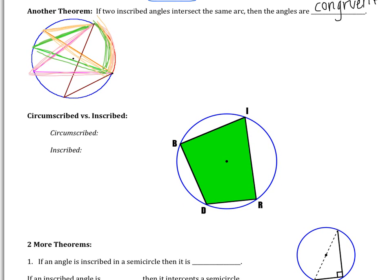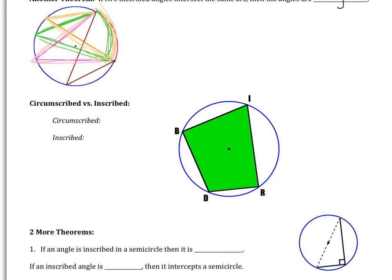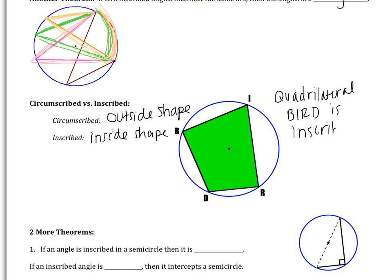We're going to use that idea to talk about inscribed and circumscribed. You have this figure, you have quadrilateral BIRD, and then you have a circle drawn around it. So circumscribed is the outside shape. And then inscribed is the inside shape. In this case, quadrilateral BIRD is inscribed in a circle. So it just means it's inside of a circle. You could also say that there's a circle circumscribed around BIRD. So there's a circle drawn around the outside.